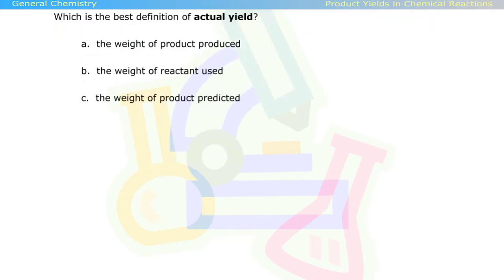Which is the best definition of actual yield? A, the weight of product produced? B, the weight of reactant used? Or C, the weight of product predicted?